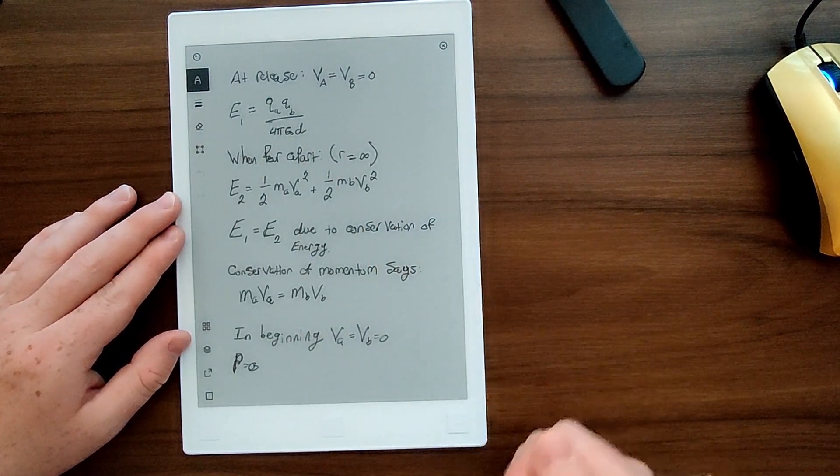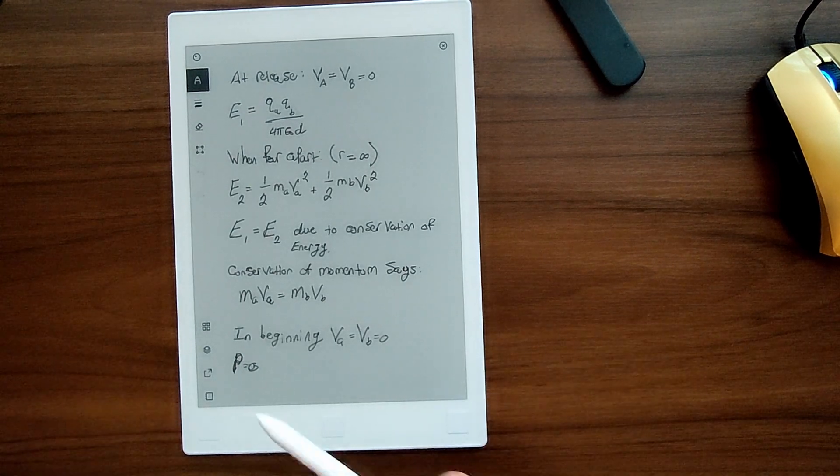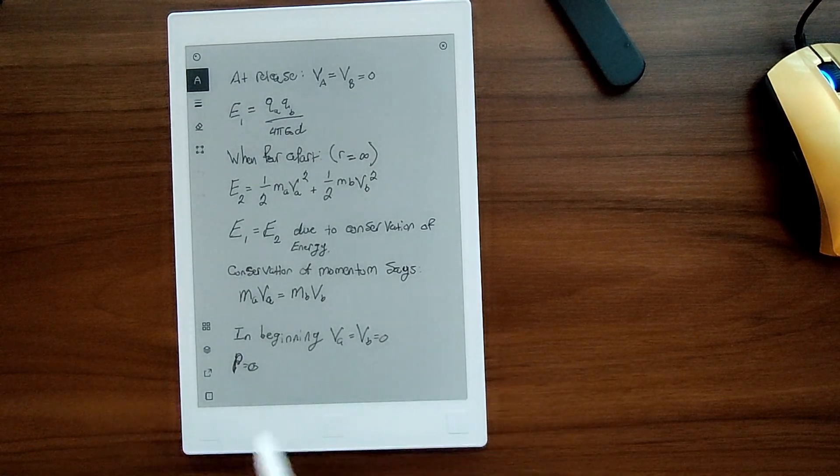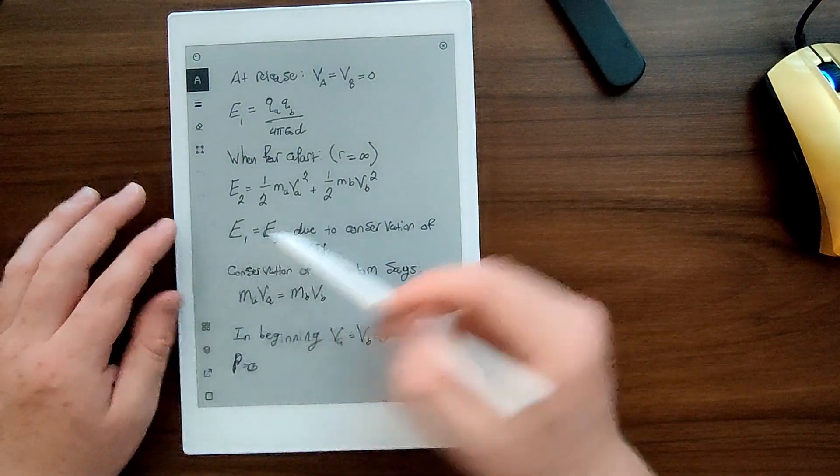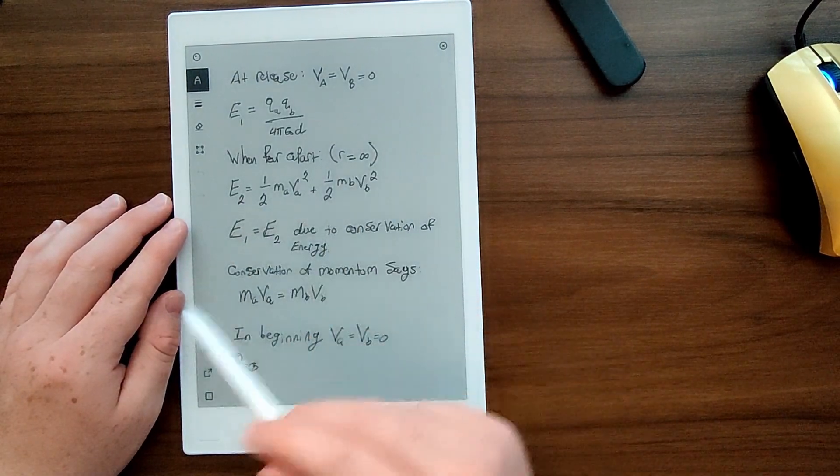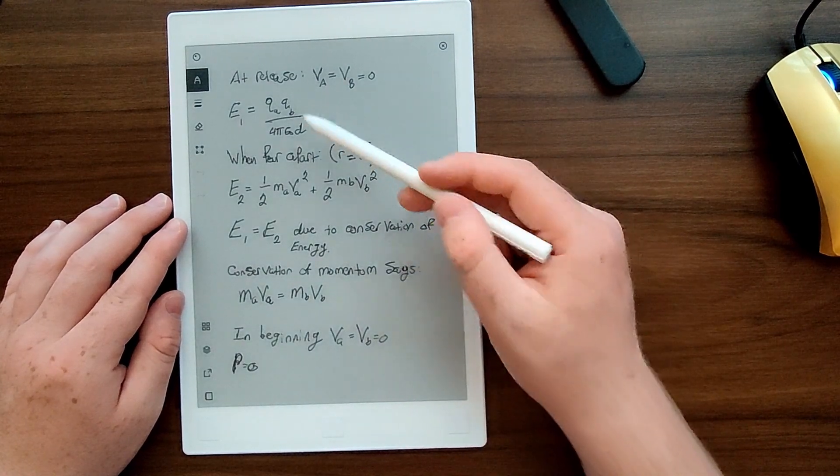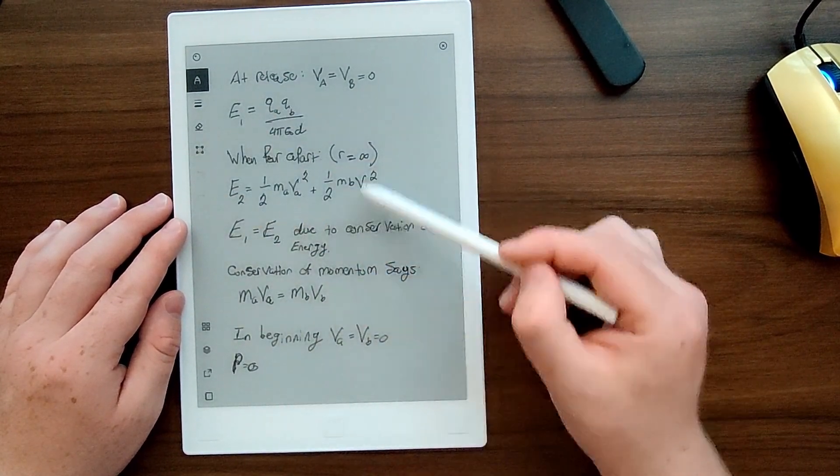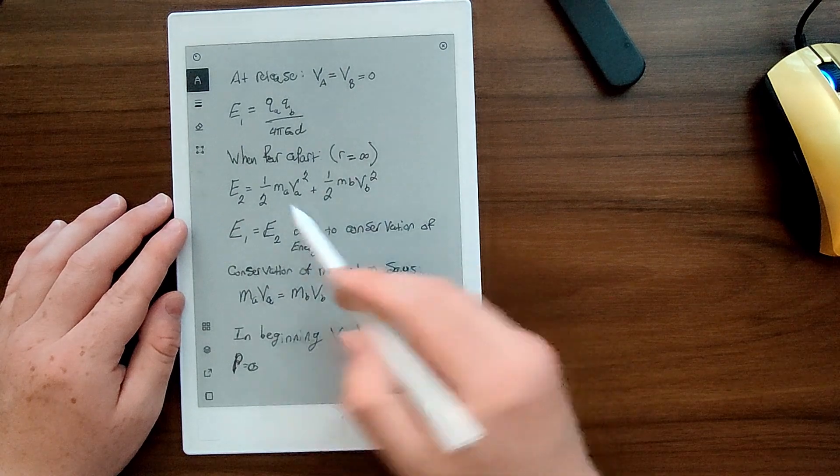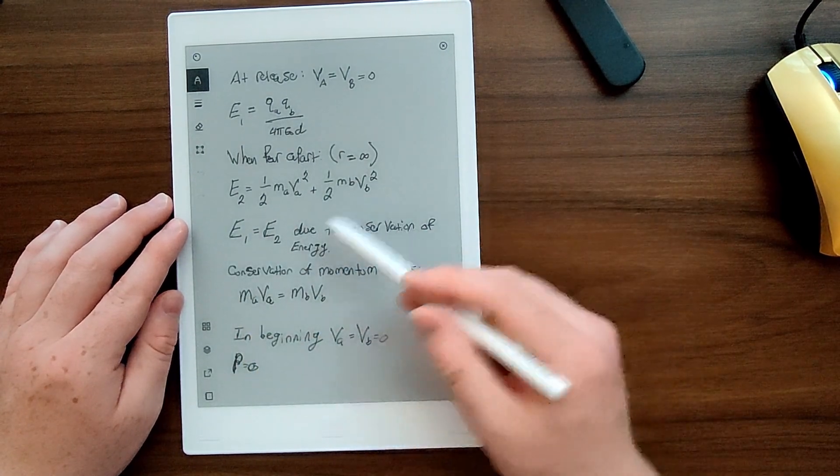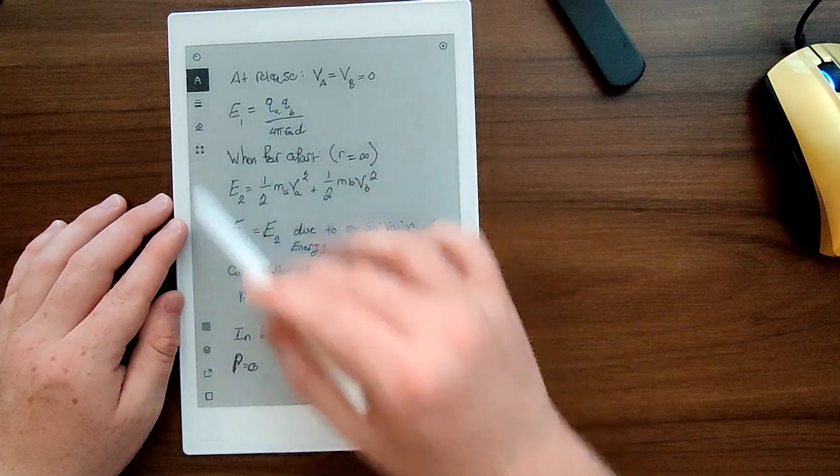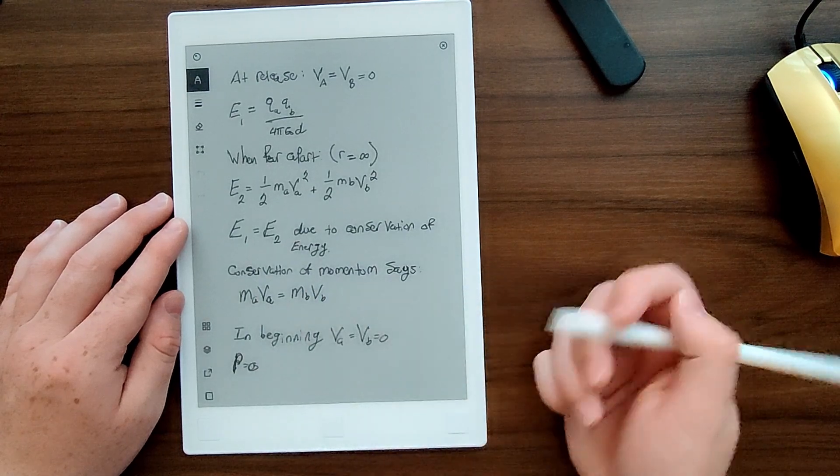And due to the conservation of energy, the energy at the end has to be equal to the energy in the beginning. So you can equate this and this, E1 and E2, and that gives you sort of one set of equations to work with. And before we do anything with that, let's look at the conservation of momentum.